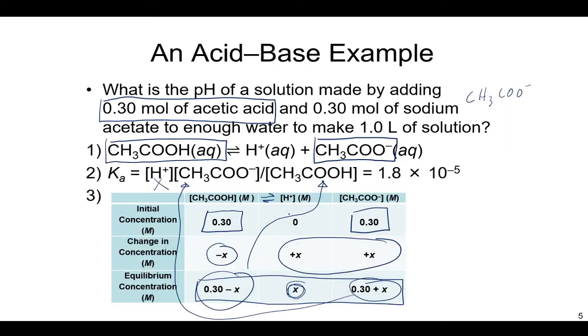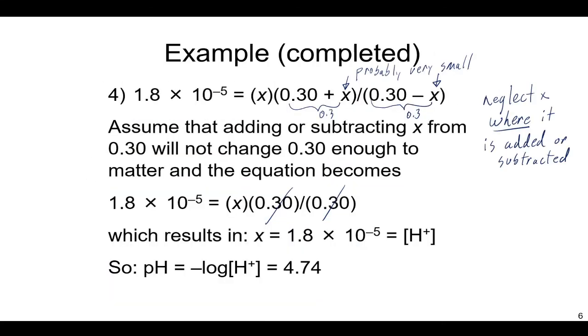Okay, if I was asked here, and I think I was to calculate the pH, well, this X value is the H plus concentration. And so my pH just becomes negative log of that 1.8 times 10 to the negative 5. And that then is my pH 4.74.